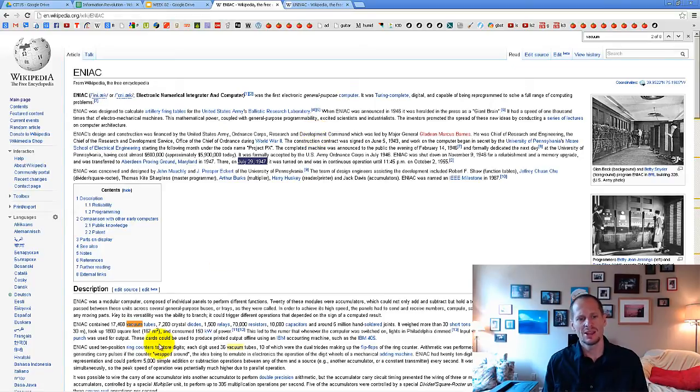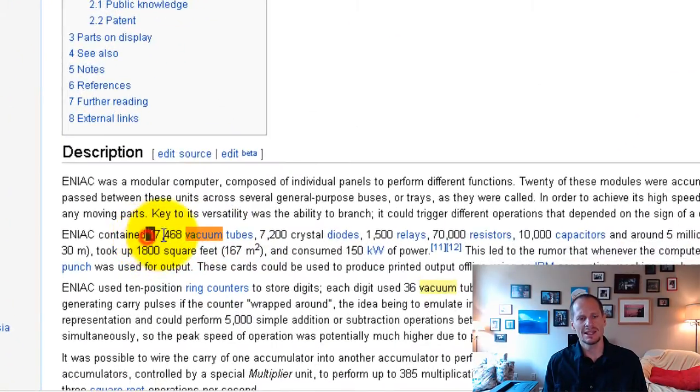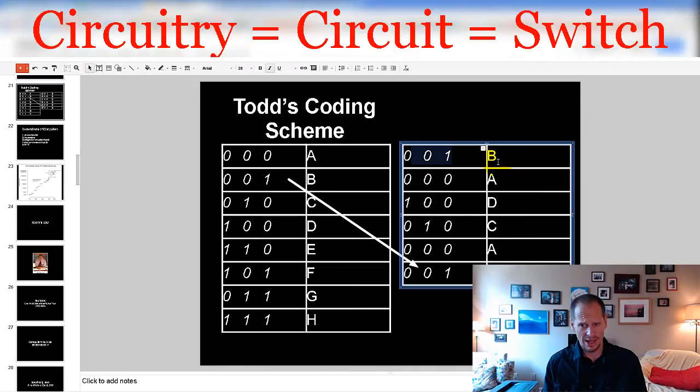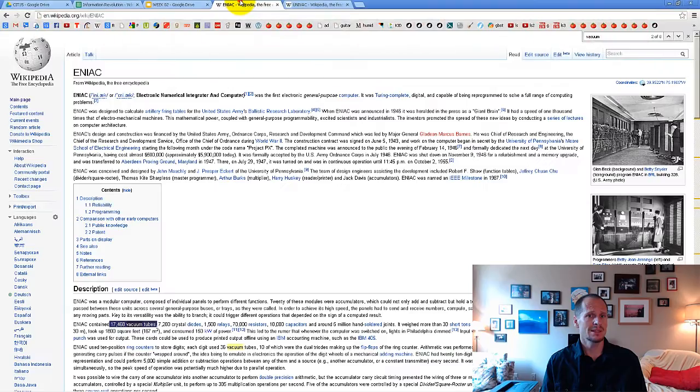The first computer had 17,468 vacuum tubes. We saw in that one little schematic here we would have needed three circuits there for each letter, and we had six letters, so we would have needed 18 different circuits which could be in on or off states. If it was an original computer, we would have needed 18 vacuum tubes so that we could store B, A, D, C, A, B, those six letters.